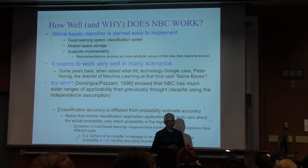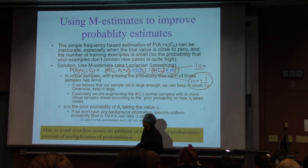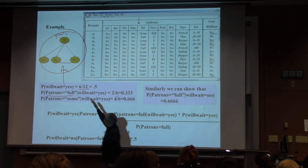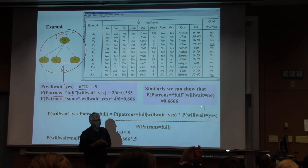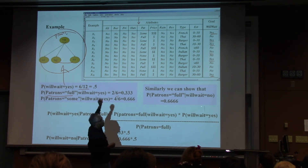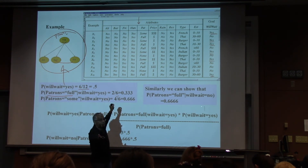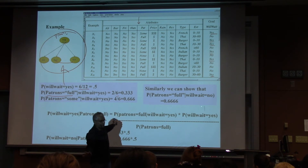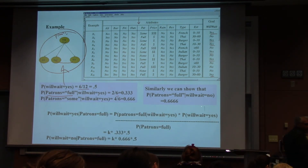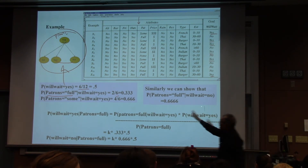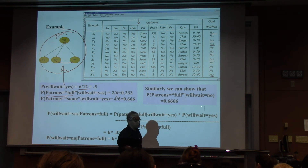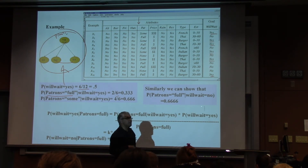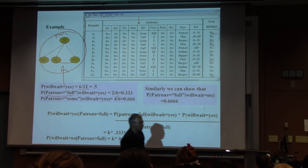Naive Bayes classifier is completely generative. Even though I've been thinking of giving attribute values and asking for the class, I could give the class and some attributes and ask what are the remaining attributes — nothing stops that. In a Bayes network you can give evidence on some nodes and ask for the posterior on the rest. The class may be of interest, but everything is available. That's the beauty of generative models.